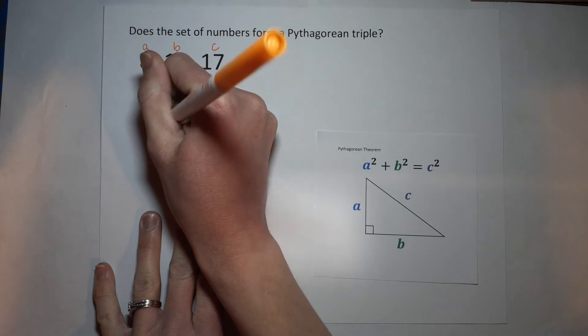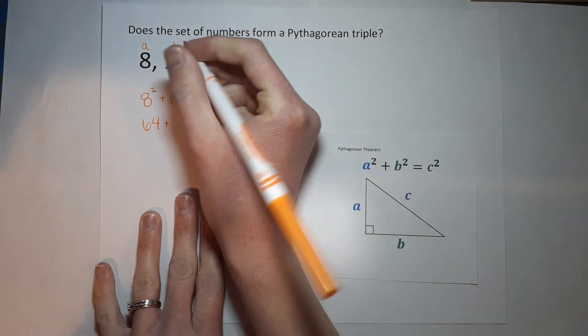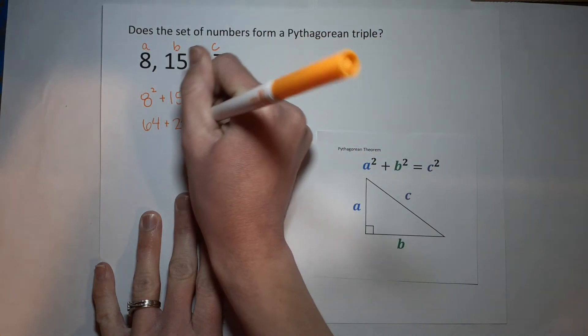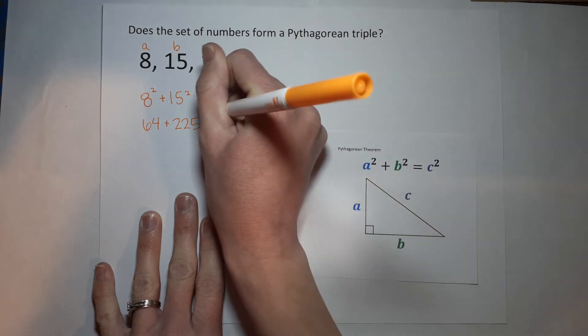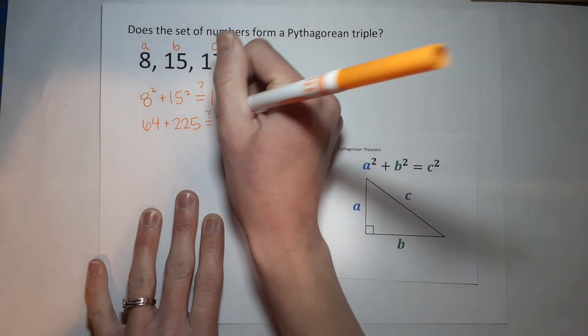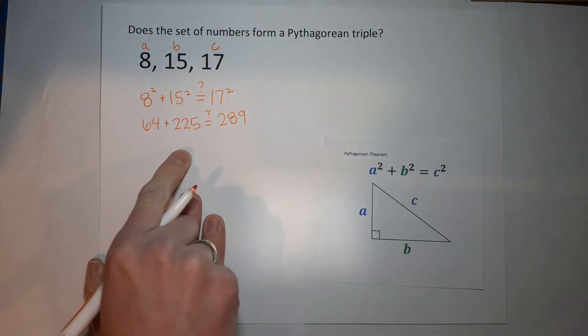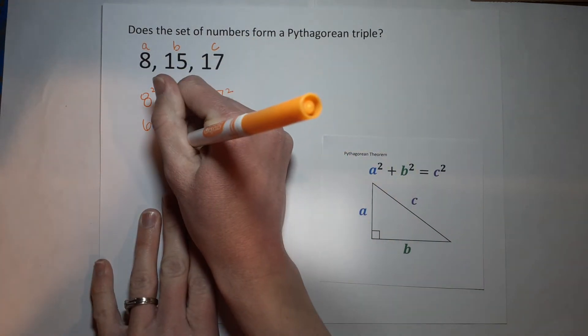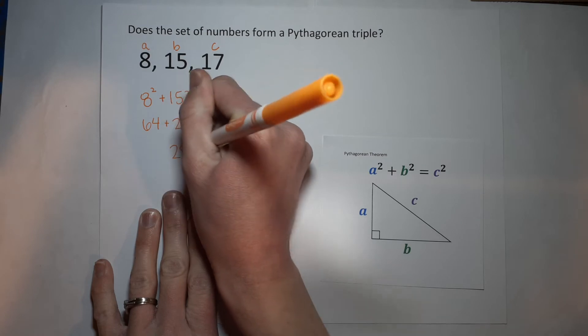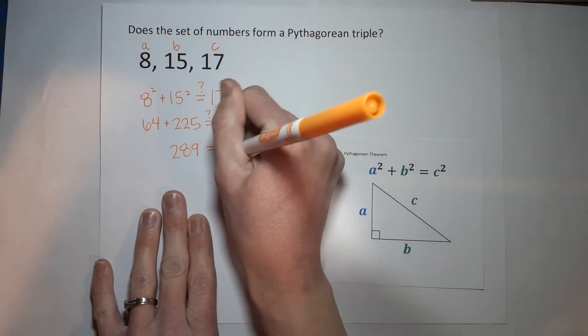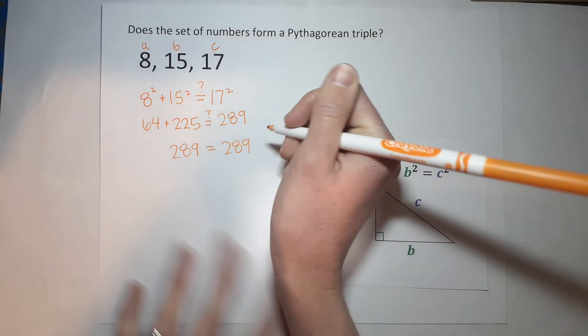8 times 8 gives me 64. 15 squared gives me 225. We're wondering if that equals 17 squared, which is 289. All right, 64 plus 225 is 289. Oh my gosh, best day ever.